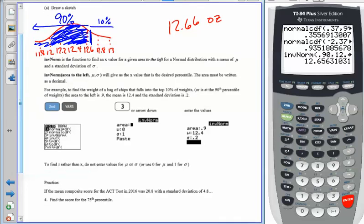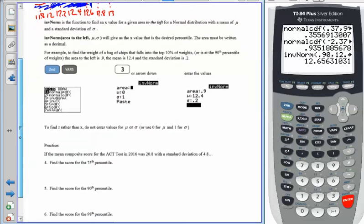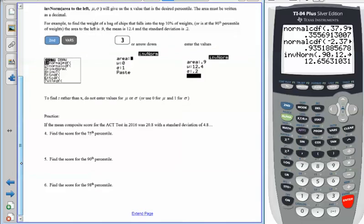The key again is to realize that the calculator only works to the left, so you got to read to make sure that you're doing the correct answer. Our practice problems here, you're going to be trying by yourself, is ACT test in 2016 has a mean of 20.8 with a standard deviation of 4.8. Calculate the score that gets you in the 75th percentile, the 90th percentile, and the 98th percentile. So pause the video, do those calculations, and I'll come back with the answers for you after you've worked through them.